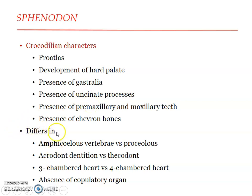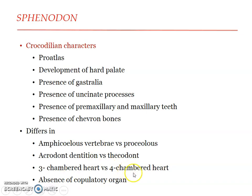However, Sphenodon differs from crocodiles in several characters. Sphenodon possesses amphicoelous vertebrae — concavities on the centrum on both sides — while in crocodiles the vertebrae are procoelous, with a concavity on the anterior end and a convexity on the posterior end. Dentition is acrodont in Sphenodon but thecodont in crocodiles — in crocodiles, teeth are placed inside sockets on the jaws. Sphenodon has a three-chambered heart as in other reptiles, while crocodiles have a completely four-chambered heart. Sphenodon also lacks any copulatory organ, while crocodiles do have one.